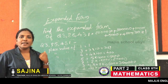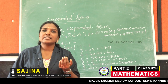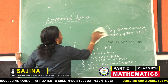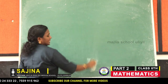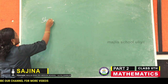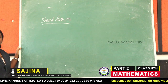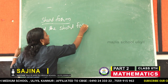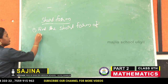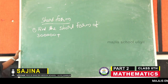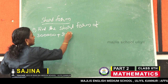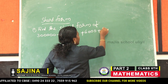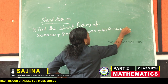Expanded form of a number is the sum of the place values of the digits in a number. Next is short form. How do you find the short form of a number? For example, find the short form of: three lakh plus eighty thousand plus six thousand plus four hundred plus forty plus seven.